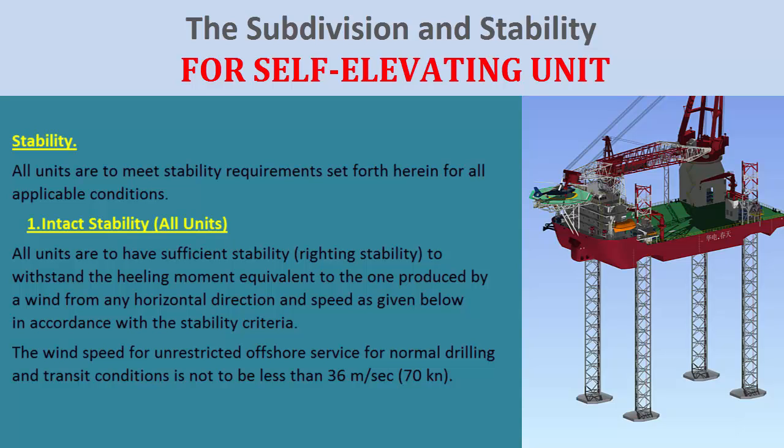All units are to have sufficient riding stability to withstand the heeling moment equivalent to the one produced by a wind from any horizontal direction and speed, in accordance with the stability criteria. The wind speed for unrestricted offshore service for normal drilling and transit conditions is not to be less than 36 meters per second (70 knots).